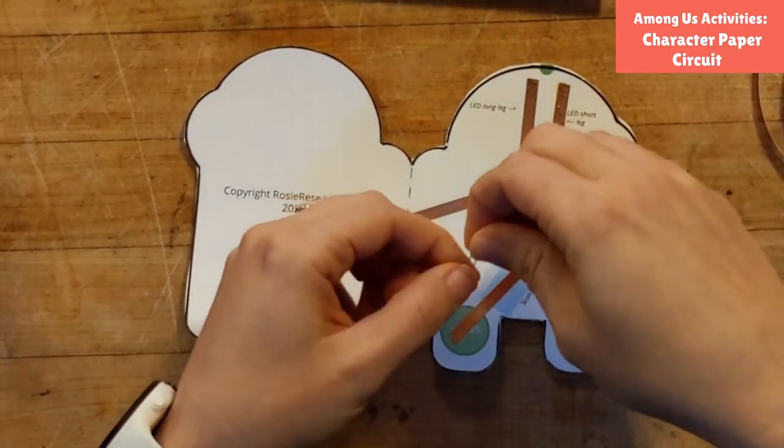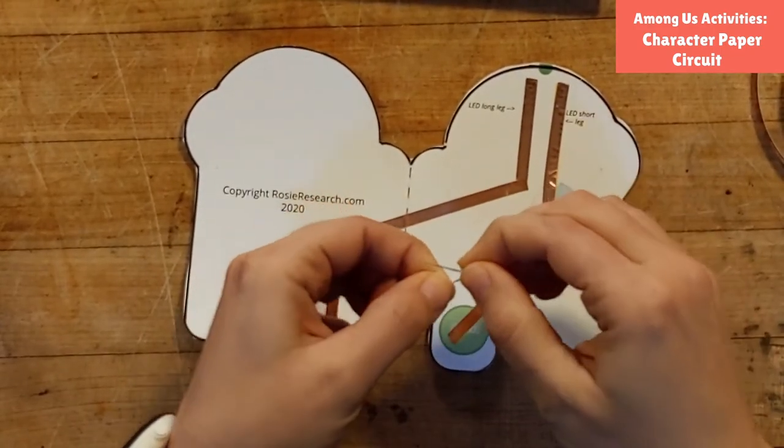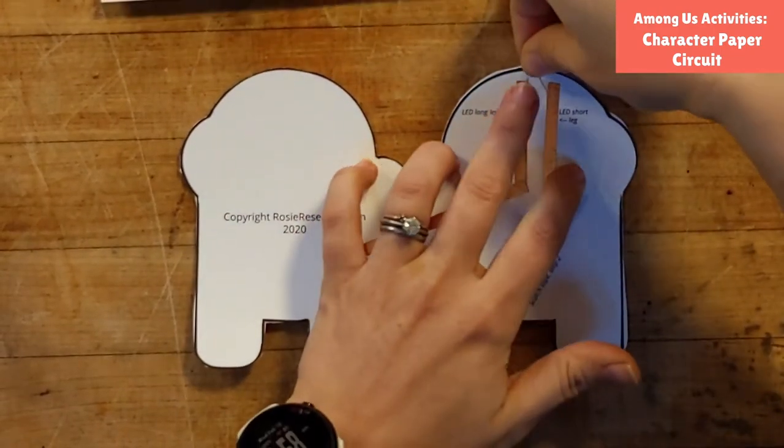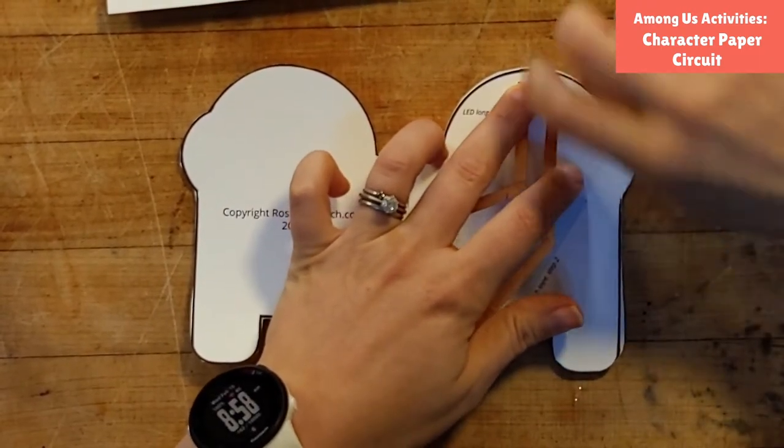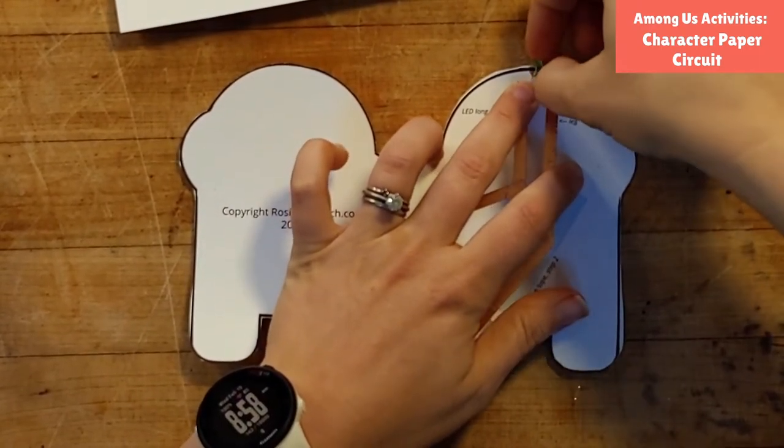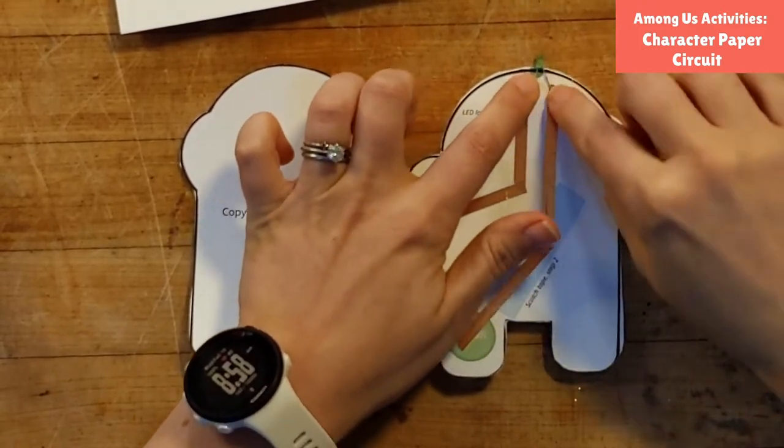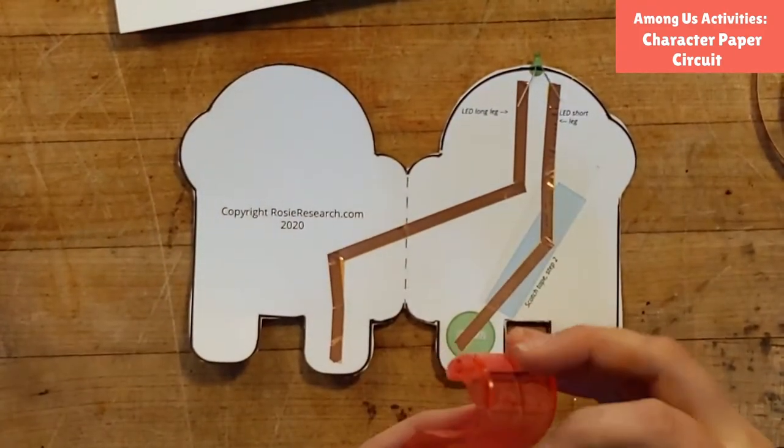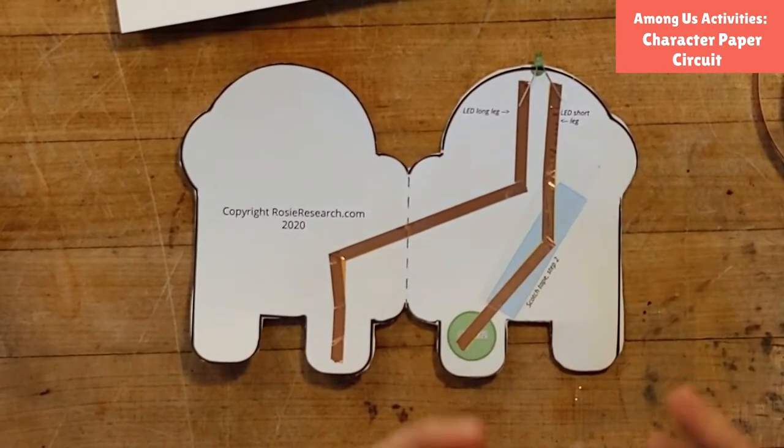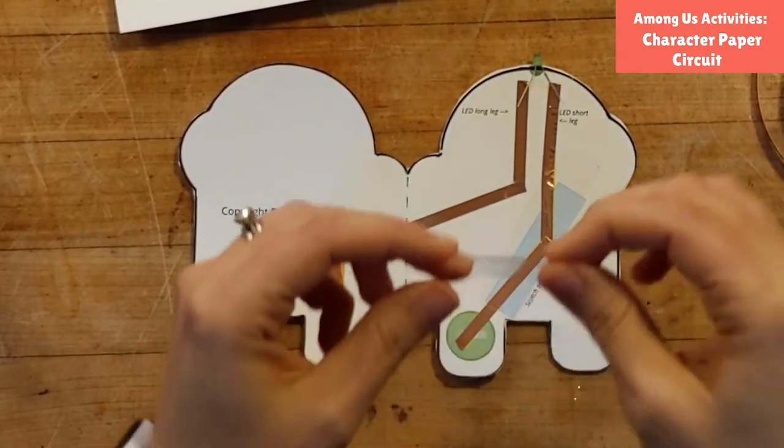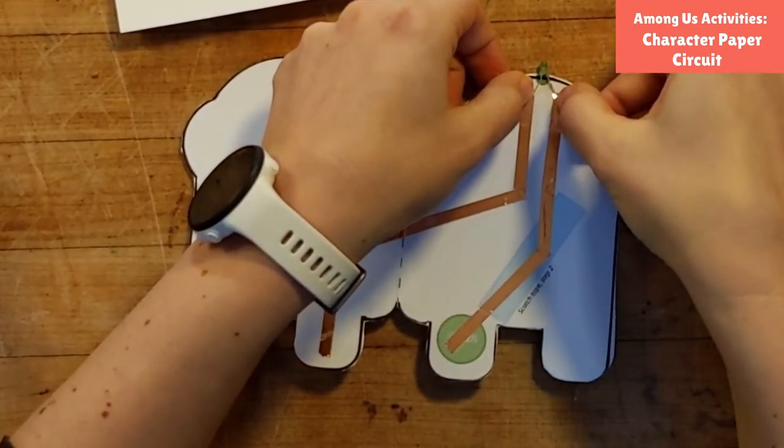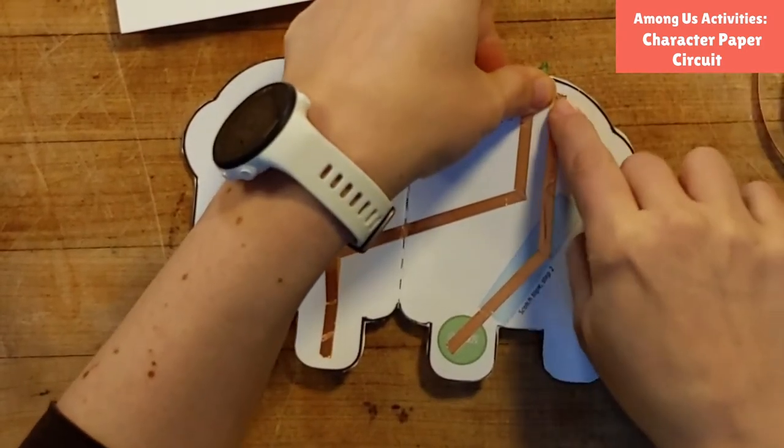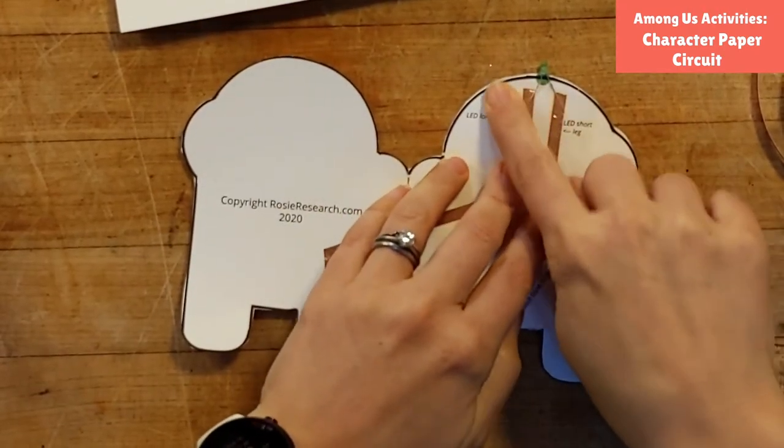LEDs are like one-way street. So it's really important that we put the long leg where the long leg goes and the short leg where the short leg goes. And then you want to make sure your legs are touching that copper tape. And then we'll just tape it down with another piece of our non-conductive Scotch or masking tape. And you can tape over both of the legs at the same time. Just as long as you make sure that they are both touching their lines of copper tape.